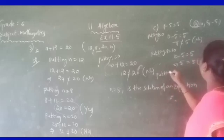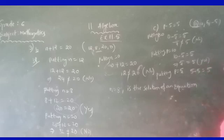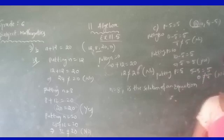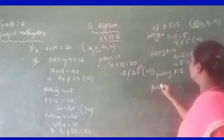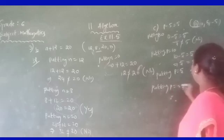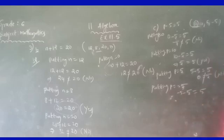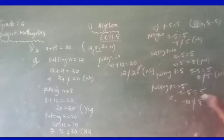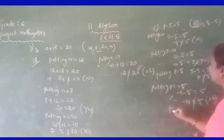Put P equal to 5: 5 minus 5 is 0. Is 0 equal to 5? No, not the solution. Put P equal to minus 5: minus 5 minus 5 is minus 10. Is minus 10 equal to 5? No, not equal. Therefore, P equals 10 is the value of the variable that satisfies this equation.